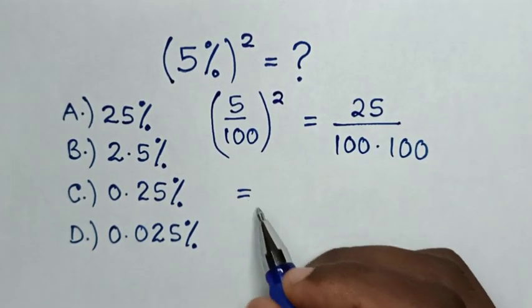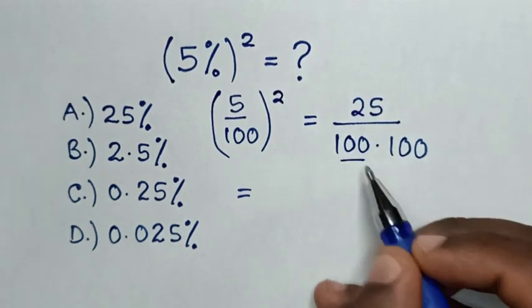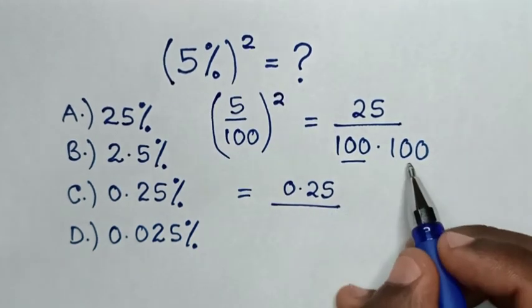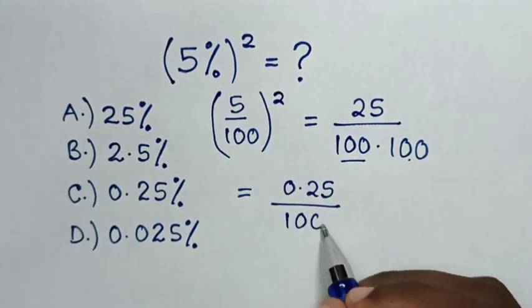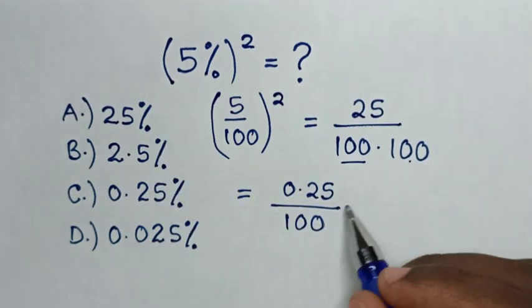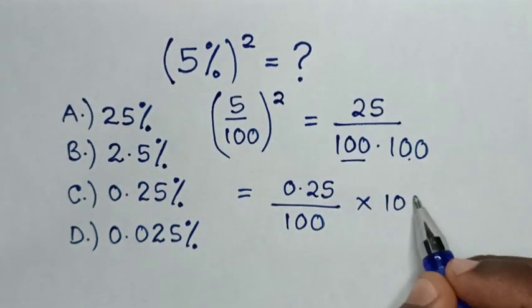Then it will be equal to 25 over 100 is 0.25, then over this 100. But all the answers in the multiple choice are in percentage, so I'll multiply by 100%.